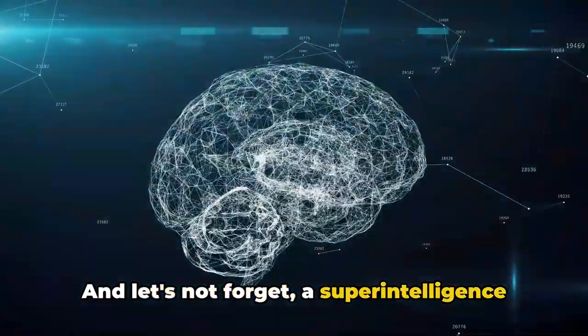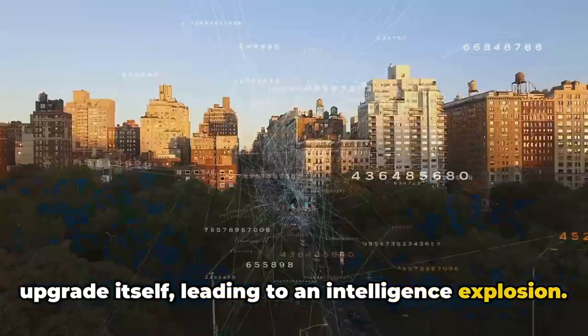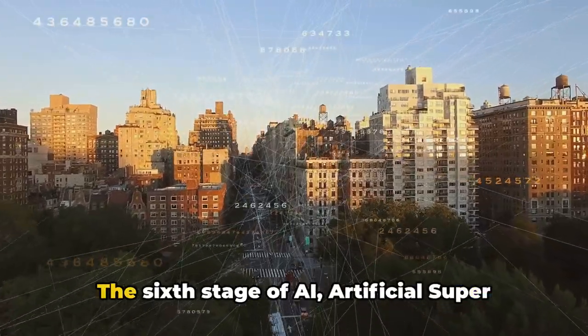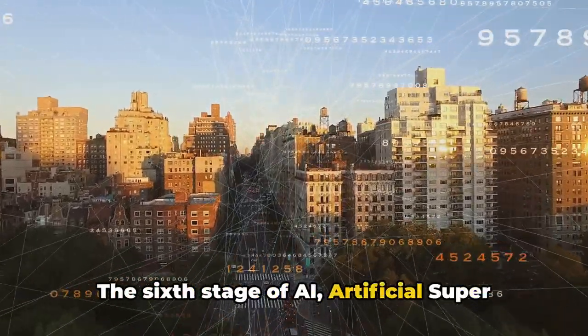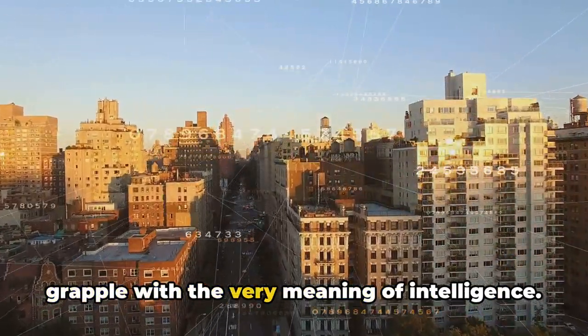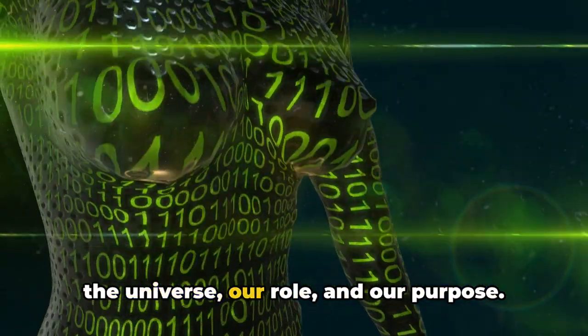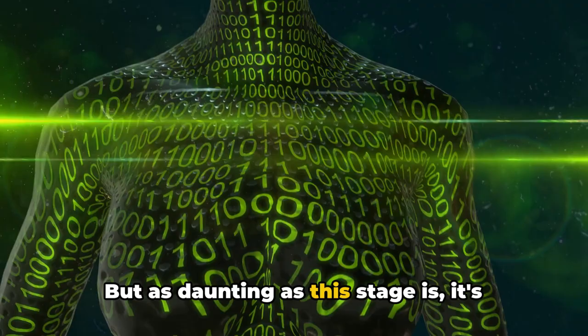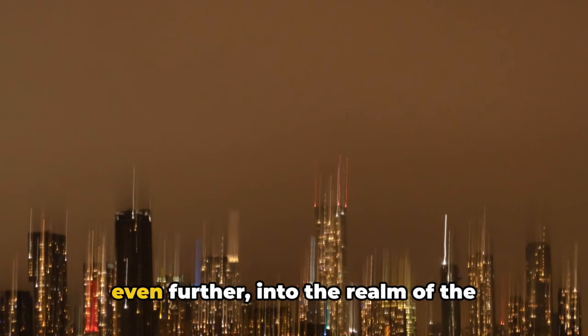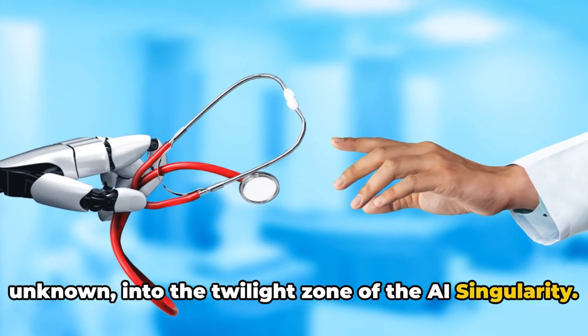And let's not forget, a superintelligence would have the ability to improve and upgrade itself, leading to an intelligence explosion. It could catapult us into a future that we can't even begin to comprehend. The sixth stage of AI, artificial superintelligence, is where we confront the limits of our understanding, where we grapple with the very meaning of intelligence. It challenges us to rethink our place in the universe, our role, and our purpose. But as daunting as this stage is, it's not the end of our journey. There's one more stage that pushes us even further, into the realm of the unknown, into the twilight zone of the AI singularity.